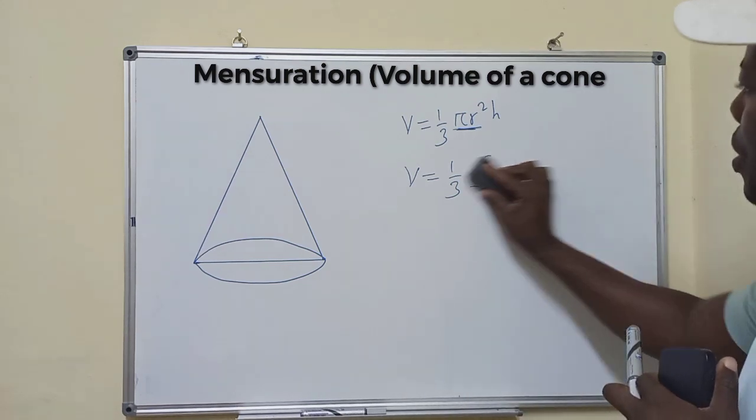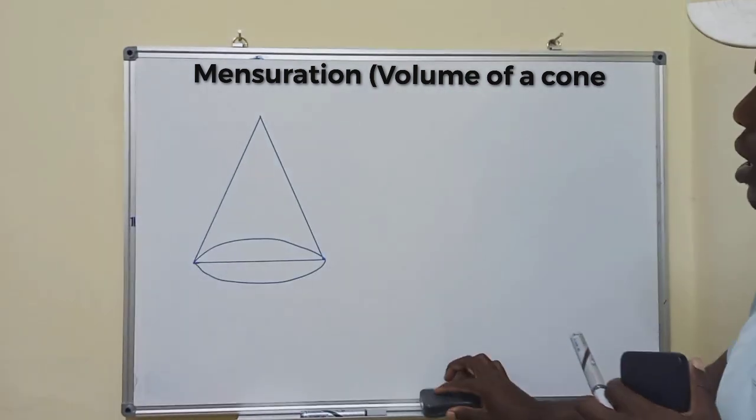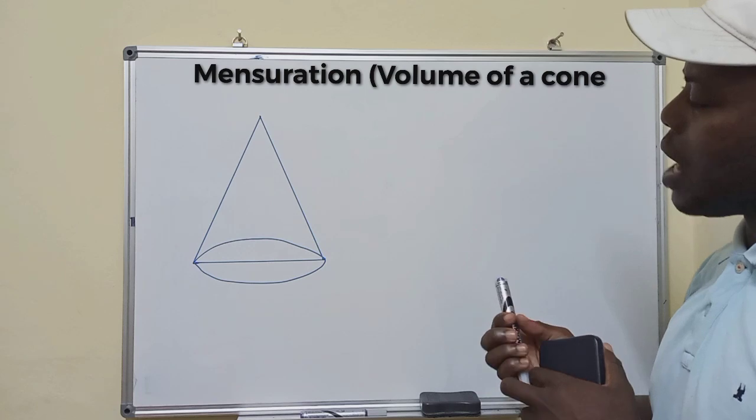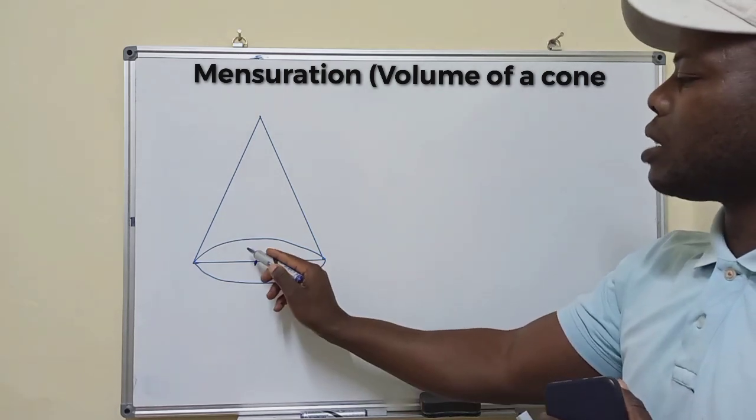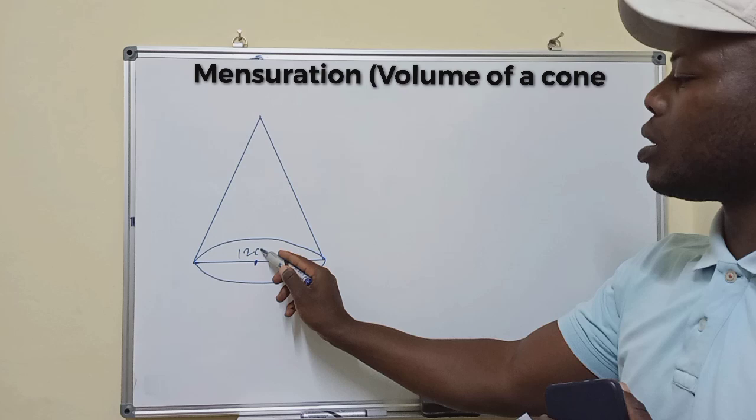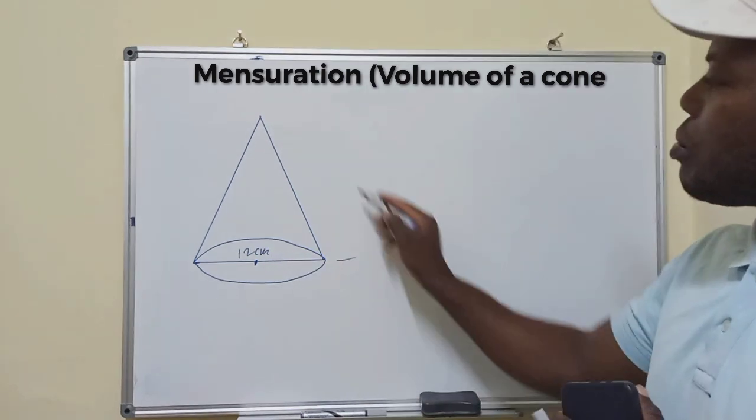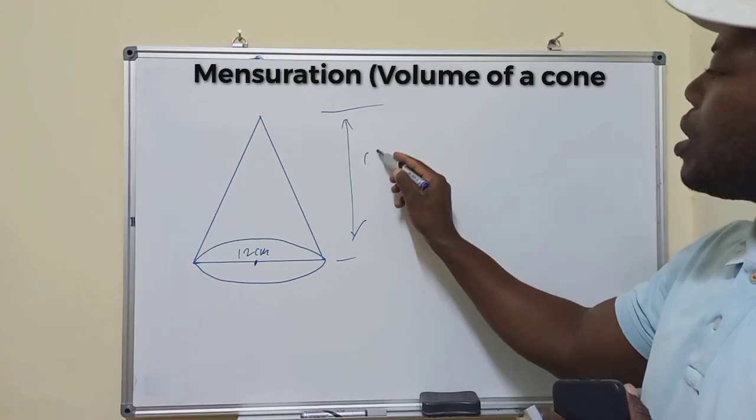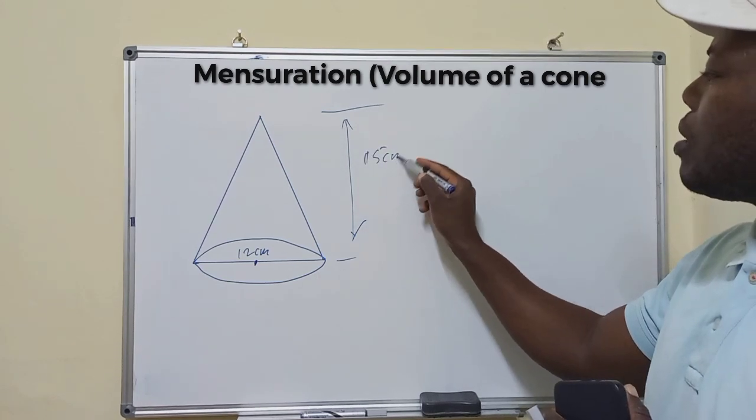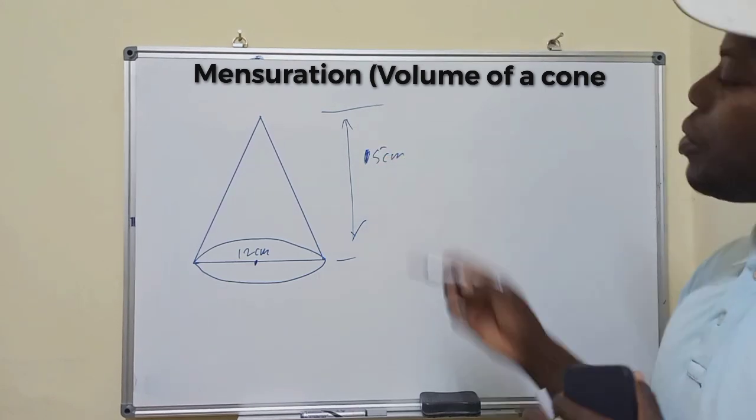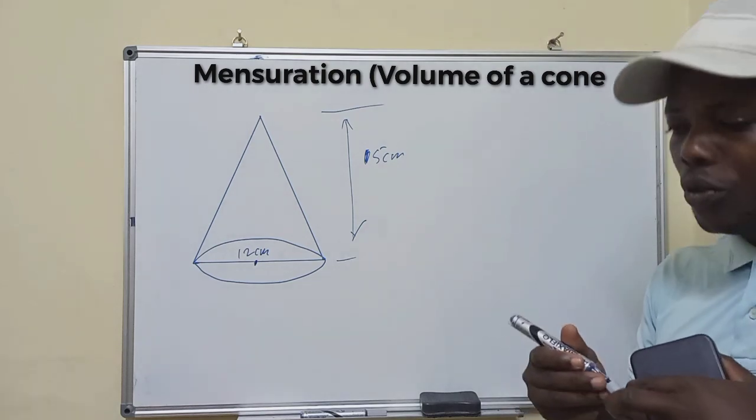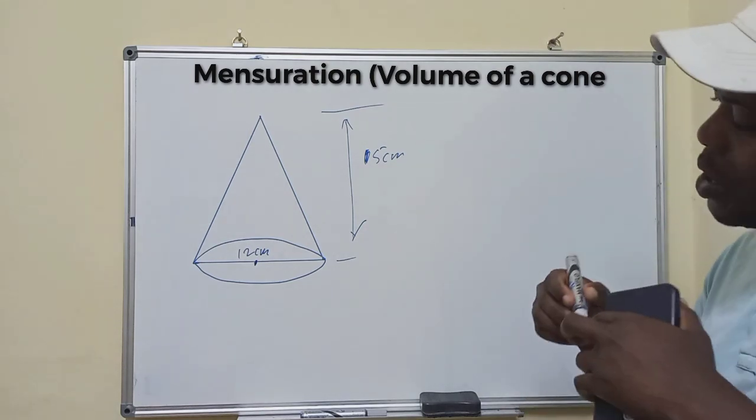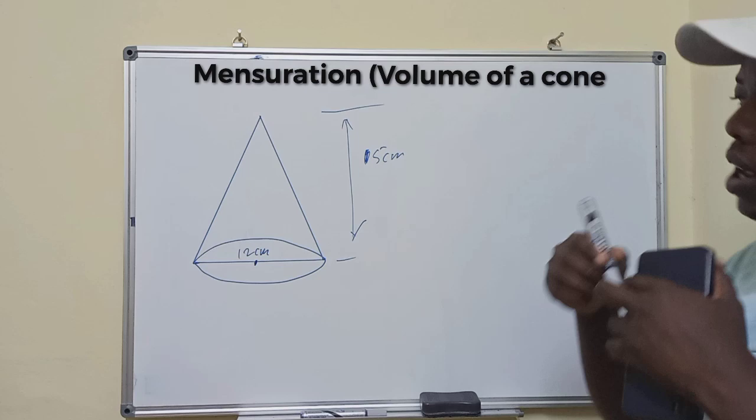So now, let's say we've got, they've given us the diameter. The diameter, let's say the diameter is 12 centimeters. And the height from here to here, it's 15 centimeters. So this is 15 centimeters and they ask us to find the volume. So how do we find the volume of a cone like this one?